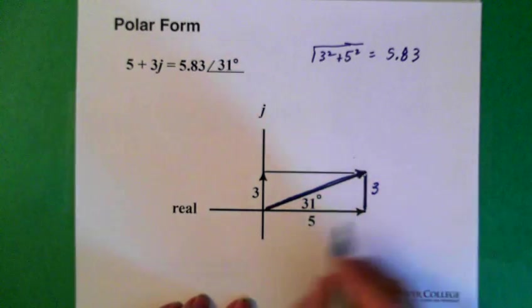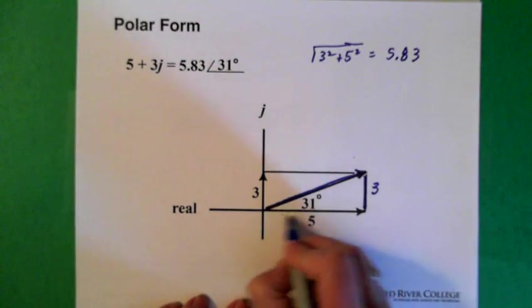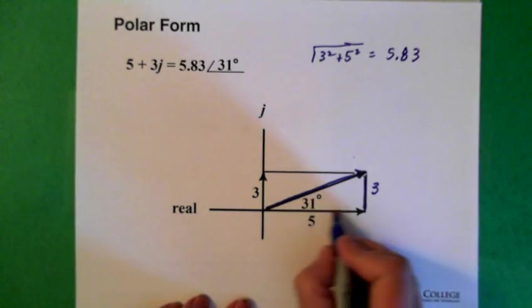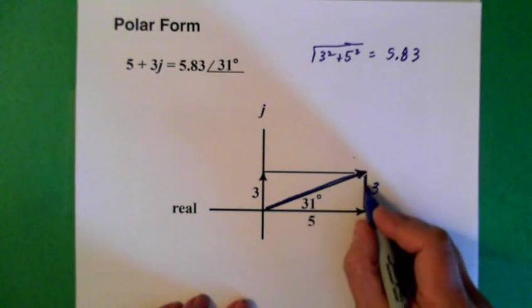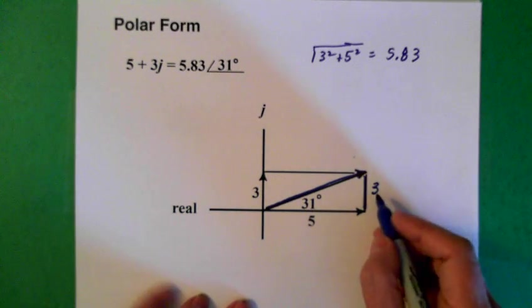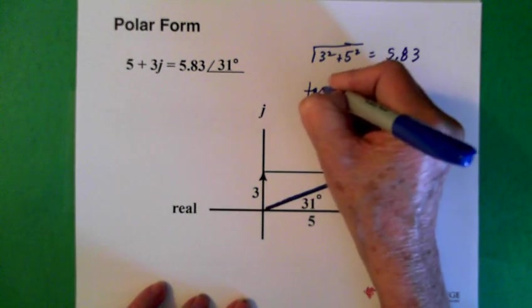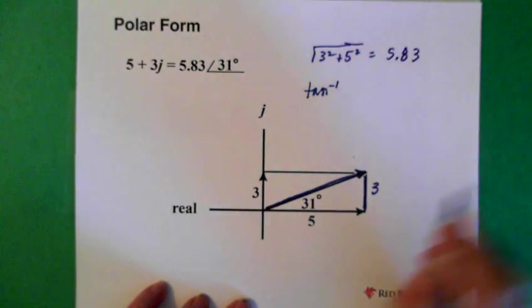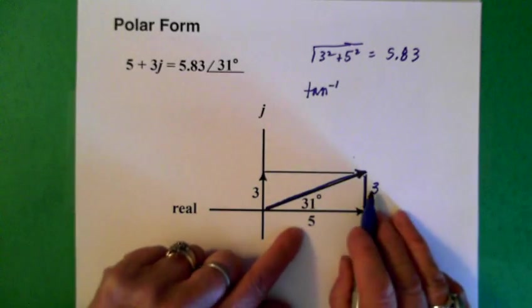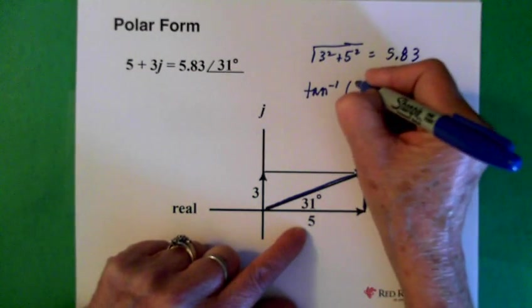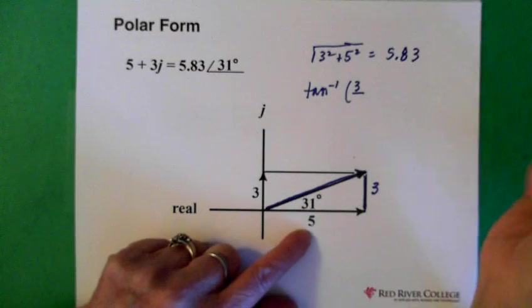So, knowing this side is 3, knowing this side is 5, we can see that this side is adjacent the angle. This side is opposite. So, in order to get the angle, we do tan to the minus 1 of opposite over adjacent.